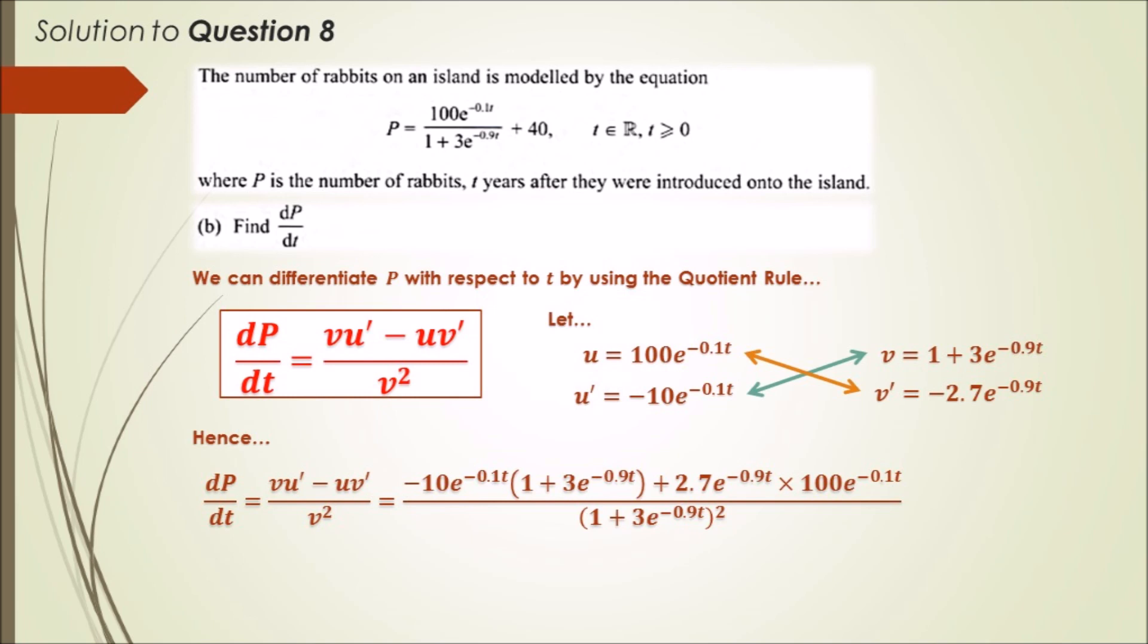All they want you to explore is just to tidy the top line. First, let's expand the brackets and multiply out the right-hand side. We should get minus 10e^(-0.1t) times 1, which is the same, minus 30e^(-t).